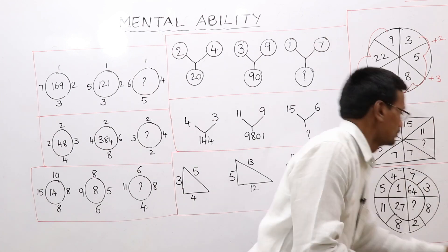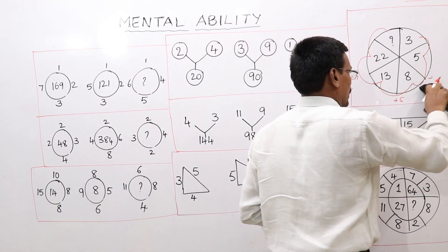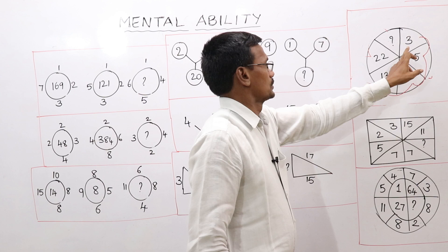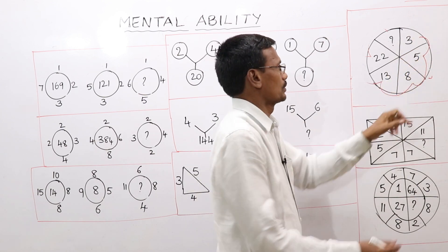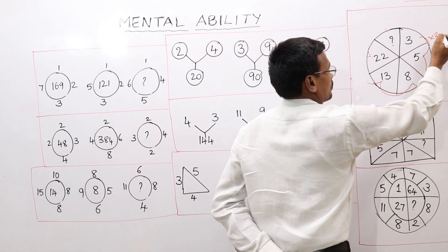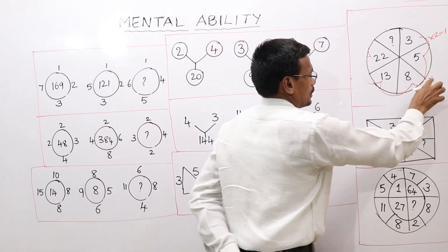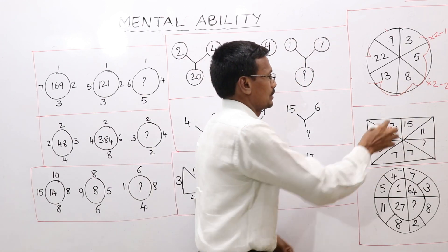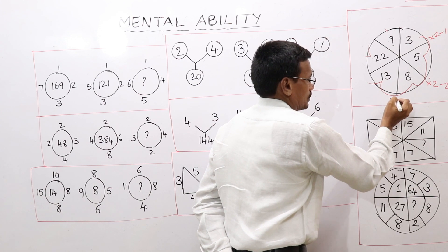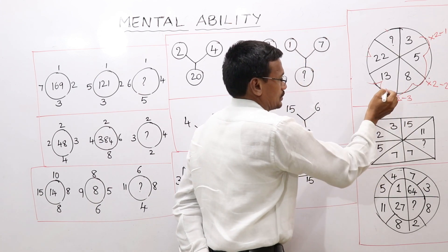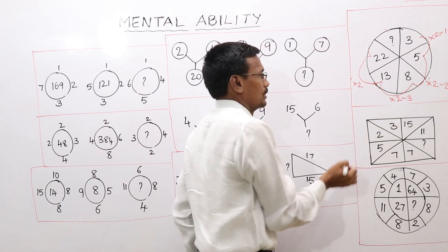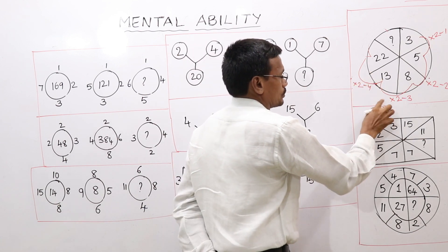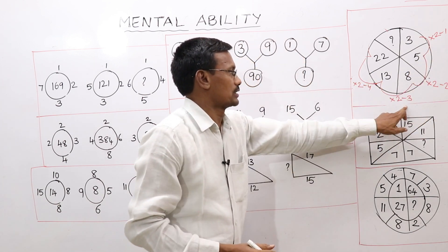So we have to check the other model also. 3 into 2 is 6, 6 minus 1 is equal to 5. Here we have 5 into 2, so 5 into 2 is 10, 10 minus 2 is equal to 8. So 8 into 2 is 16 minus 3. Then 13 into 2 is 26, minus 4. So the rule is: ×2, minus 1; ×2, minus 2; ×2, minus 3; ×2, minus 4.